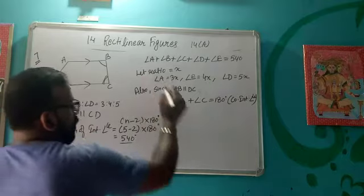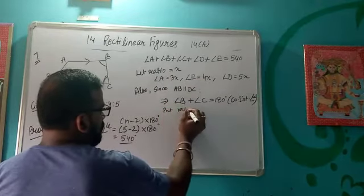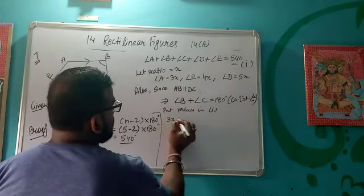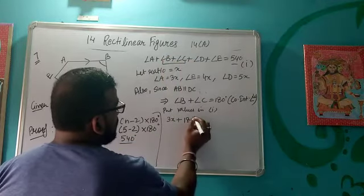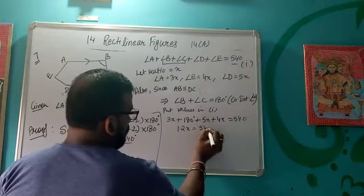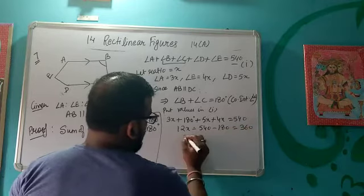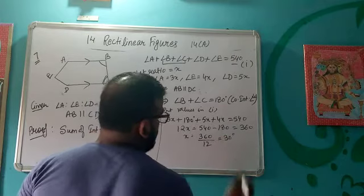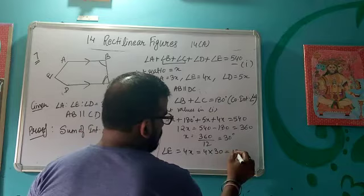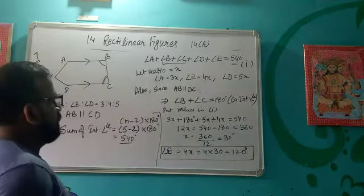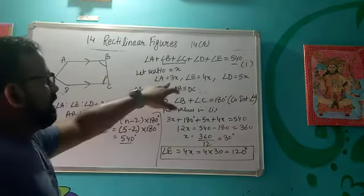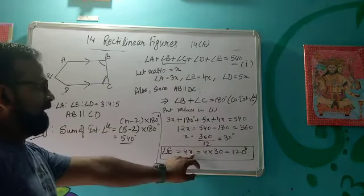Substituting all values into the first equation: 3x + 180 + 5x + 4x = 540, giving 12x = 360, so x = 30 degrees. Therefore angle E = 4x = 4×30 = 120 degrees. We used the concept that for parallel lines, the sum of co-interior angles is 180 degrees, converted the ratio to x, substituted values, and found angle E.